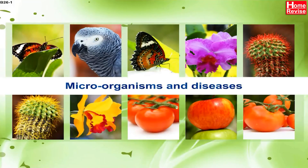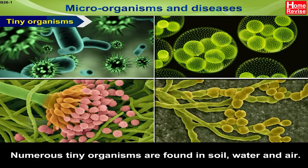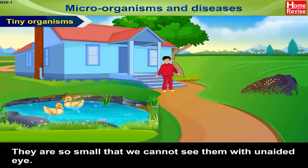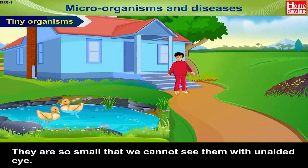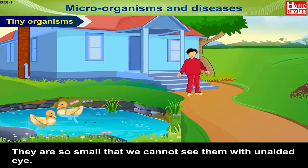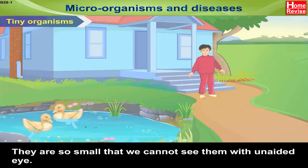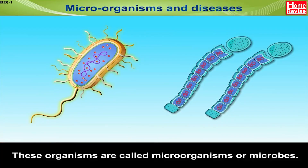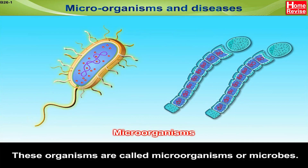Microorganisms and Diseases - Tiny Organisms. Numerous tiny organisms are found in soil, water and air. They are so small that we cannot see them with the unaided eye. We can see them only with the help of a microscope. These organisms are called micro-organisms or microbes.